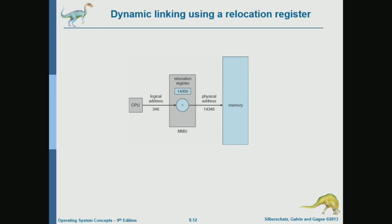Setting the relocation register will be part of the context switch. When the kernel switches to a program, it must load into the relocation register the value of the base address or the initial base address for that program.